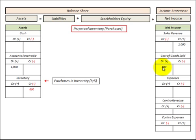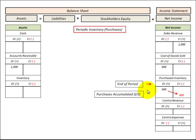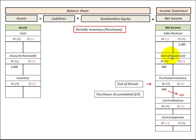We'd transfer that inventory cost directly to cost of goods sold on the income statement, which is the expense for those sales. The second method for accounting for purchased inventory would be to record it directly to a purchases expense account on the income statement. We would accumulate our purchases for the period, then close them to a cost of goods sold account, which would be charged against our sales revenue for the sales made that period.